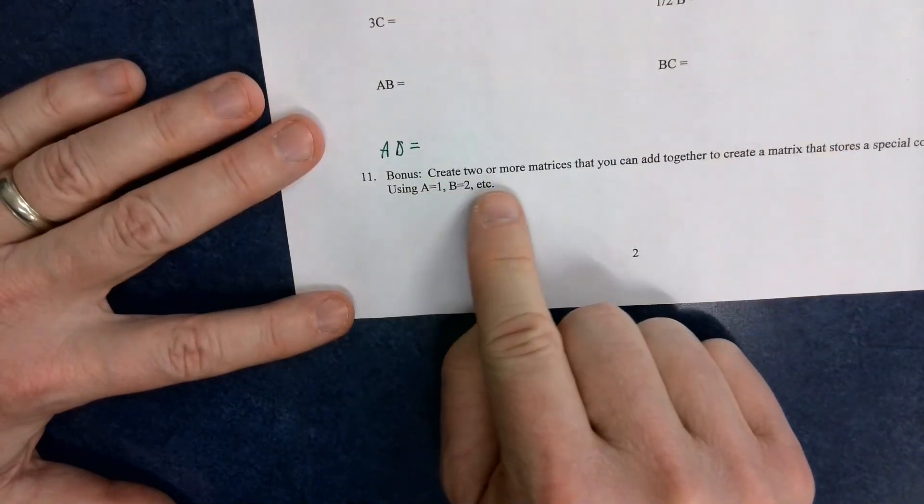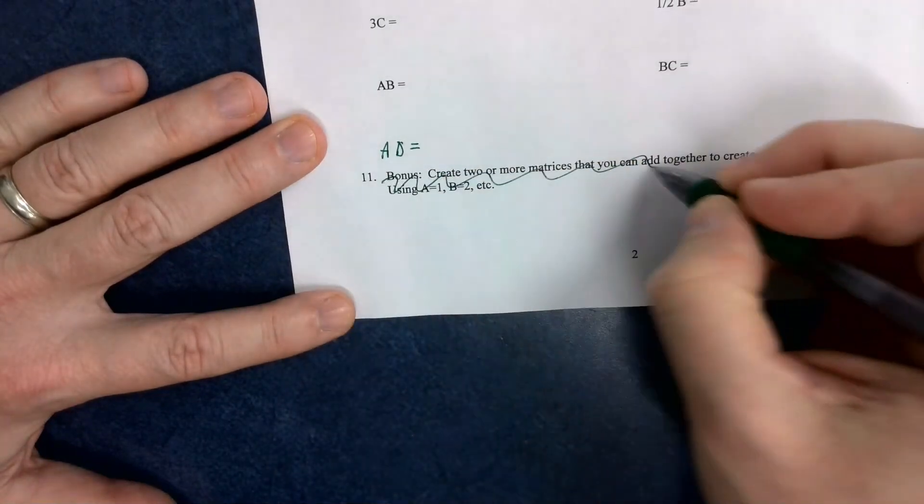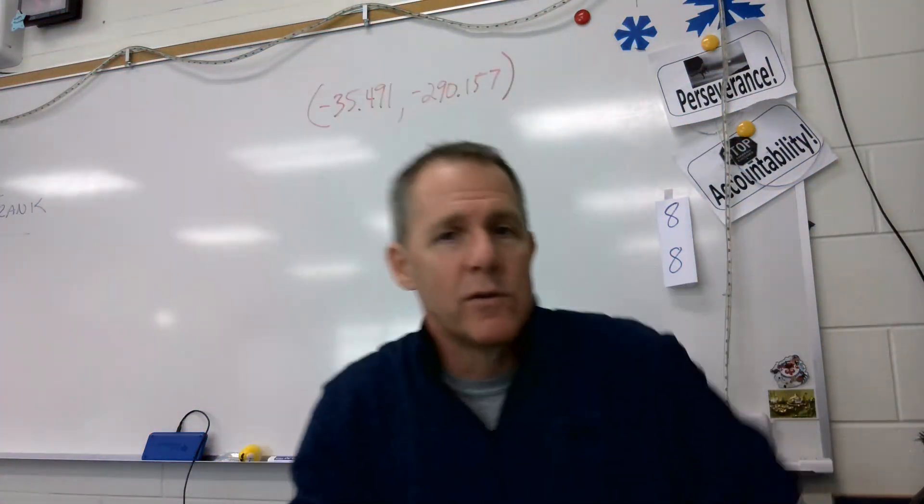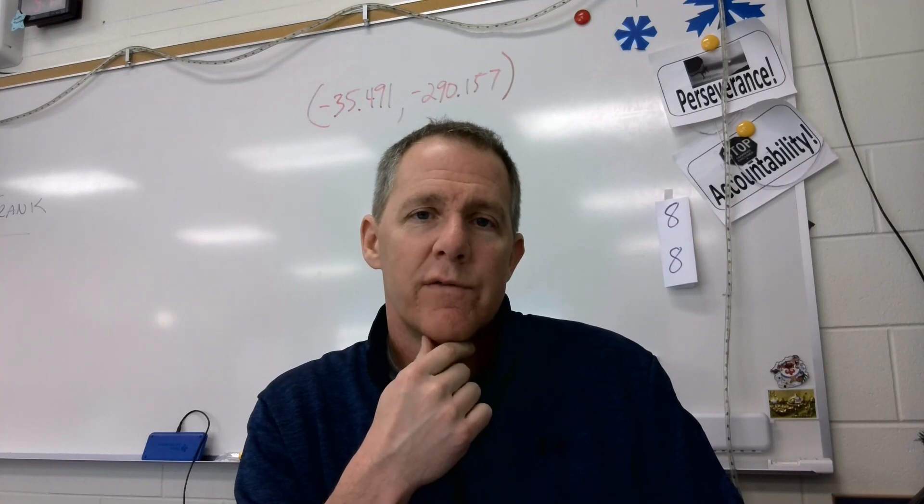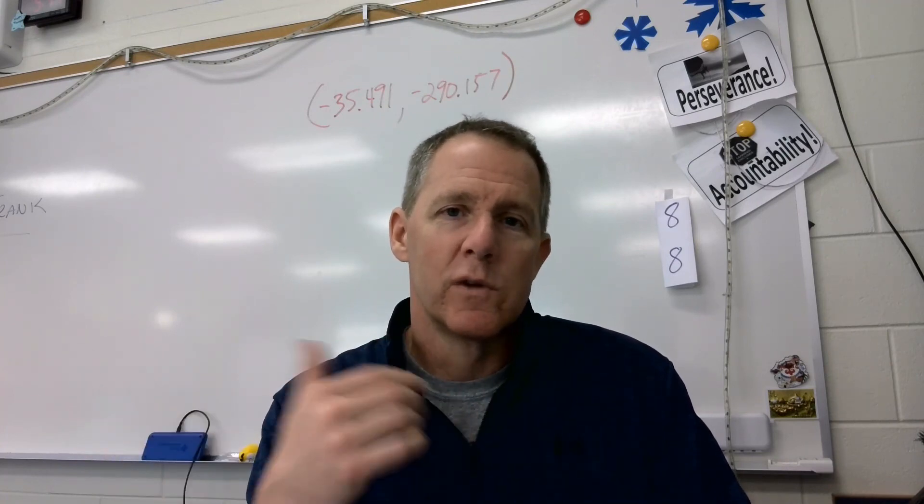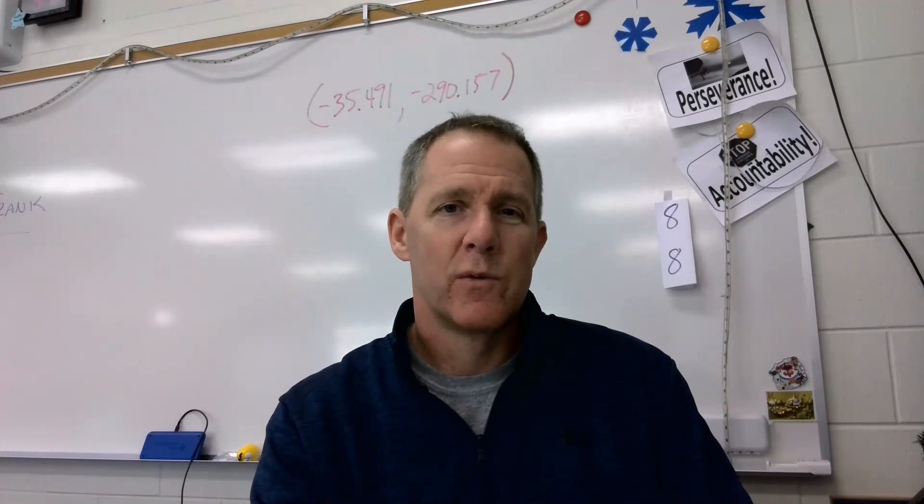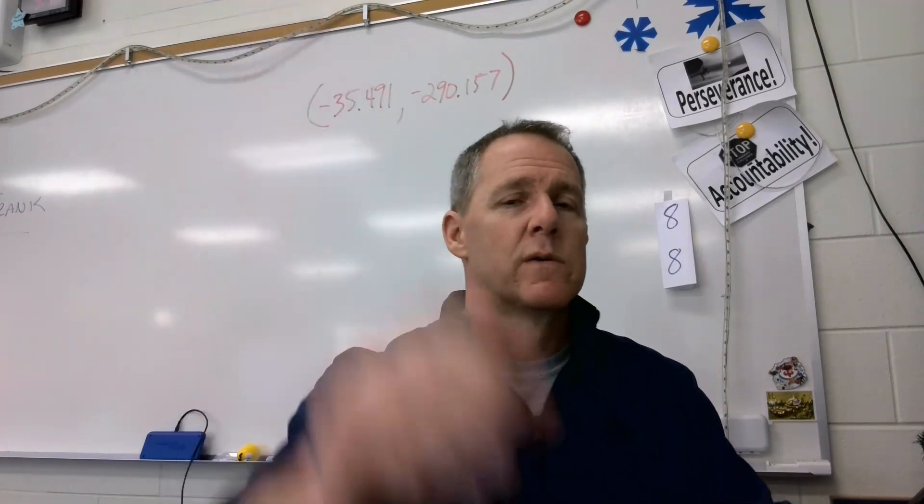Then I have a bonus question. It says, create two or more matrices that you can add together to create a matrix that stores a special code using A equals 1, B equals 2, etc. I'm going to say for right now, we're not going to do that. I'm going to have to explain that in a lot more detail in class. So again, hopefully this is all good for you. You saw this and that you will be wonderfully successful. Again, if this is March in 2022 when you're watching this, I'm going to see you tomorrow in school and we'll finalize the rest of this stuff. Review over some of that substitution, elimination, Kramer's rule, all those kind of things. If it's later on in the future, I hope this was a beneficial thing and you were able to at least look at a lot of practice problems I had. Stop the video, slow it down, and go from there to answer any of those questions. I'll talk to you later. Mr. Bess, out.